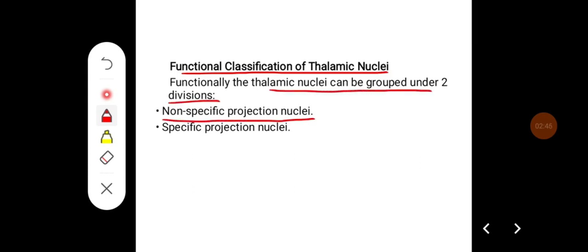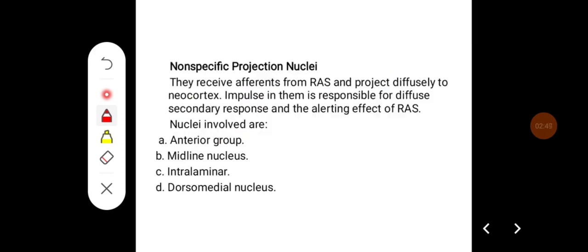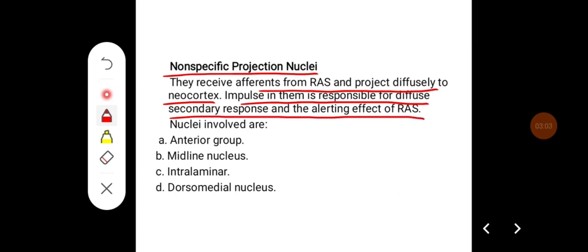Functional classification of thalamic nuclei: functionally, the thalamic nuclei are grouped under two divisions — non-specific projection nuclei and specific projection nuclei. Non-specific projection nuclei receive afferents from the reticular activating system and project diffusely to the neocortex. Impulses in them are responsible for diffuse secondary response and the alerting effect of the reticular activating system.